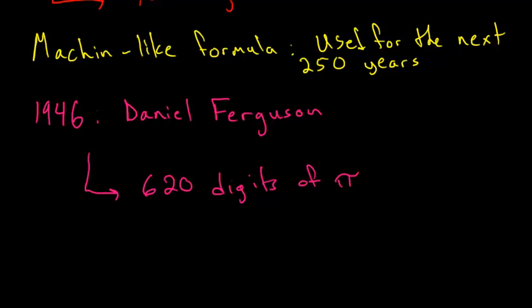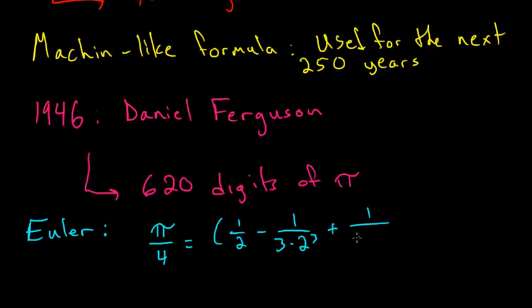Another great example of Machin-like formula was found by the mathematician Leonard Euler. He was able to find that pi divided by 4 is equal to 1 half minus 1 over 3 times 2 cubed plus 1 over 5 times 2 to the fifth minus 1 over 7 times 2 to the seventh and so on.